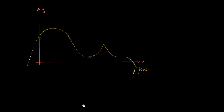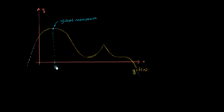What is the maximum value that this function takes on? We can eyeball that — it looks like it's at that point right over there. So we would call this a global maximum. The function never takes on a value larger than this. We can say that we have a global maximum at the point x₀, because f(x₀) is greater than or equal to f(x) for any other x in the domain.